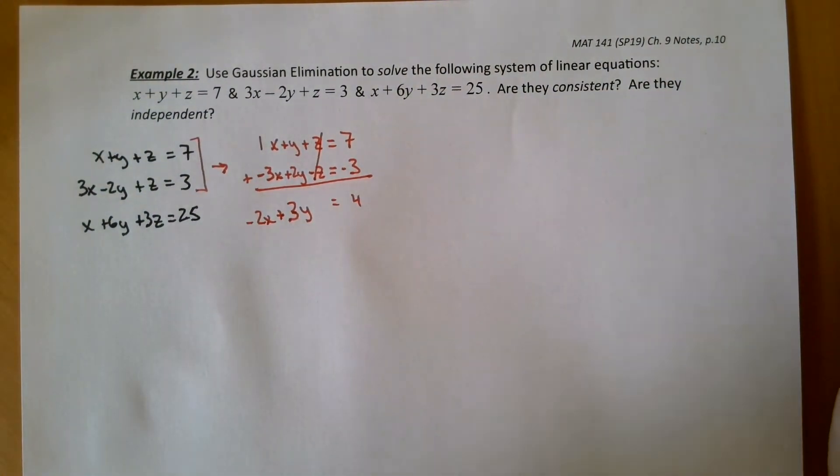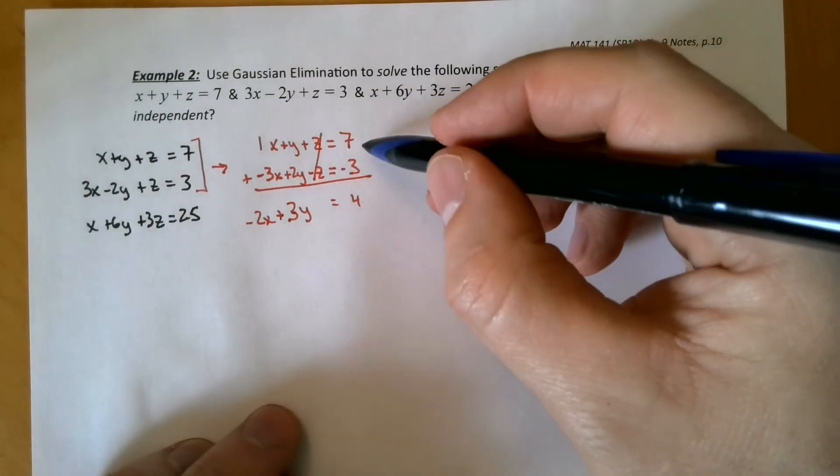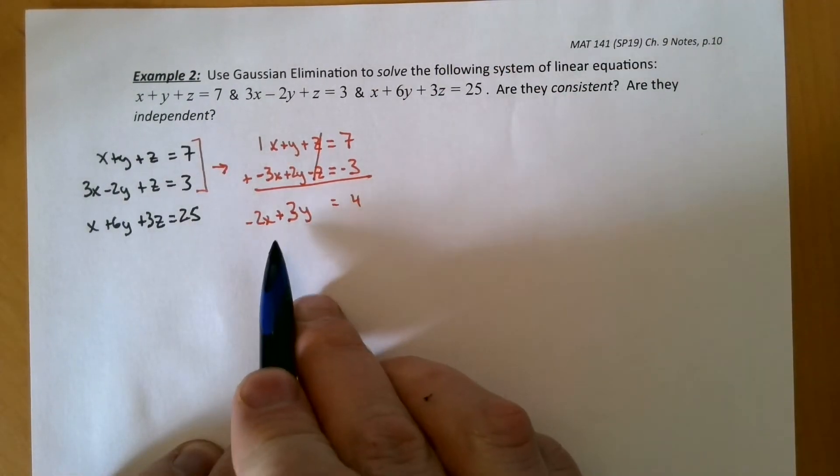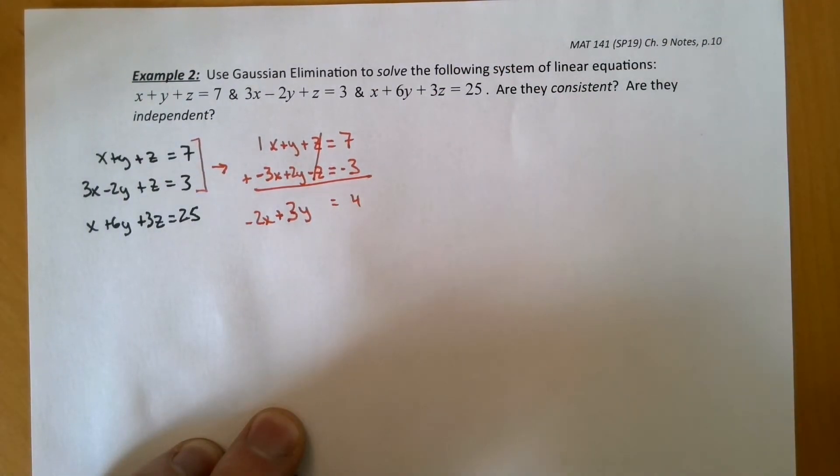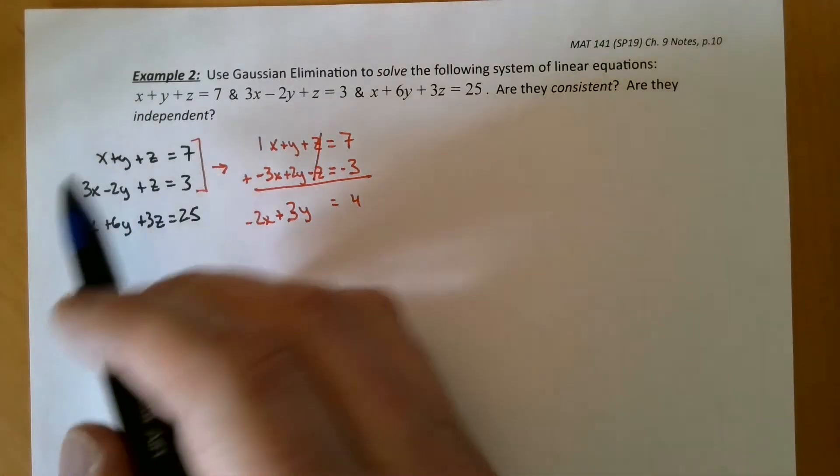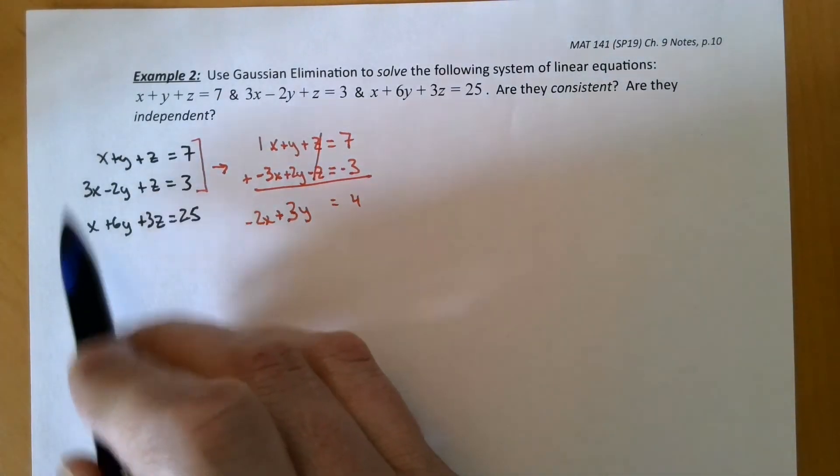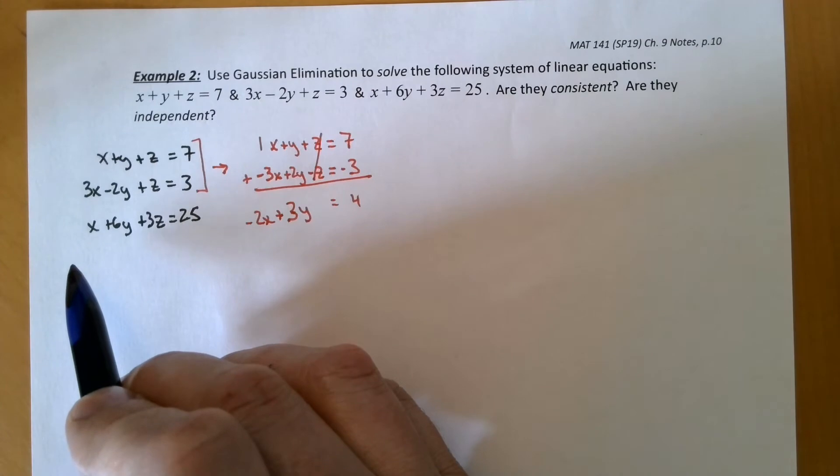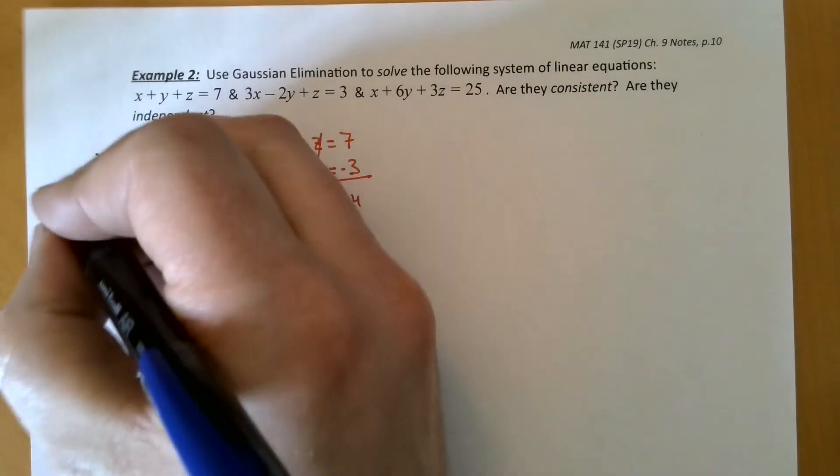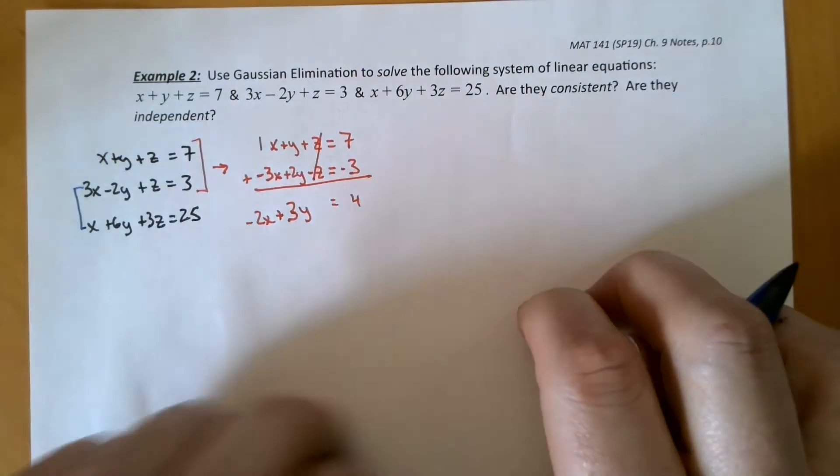So now I have to combine another two equations. And here's the key: I have to eliminate the same variable I eliminated here so that I end up with two, two-variable equations. So I could either pick the second and the third or the first and the third. I don't think it matters here. I'm just going to pick the second and the third.